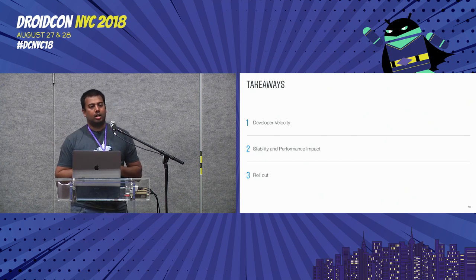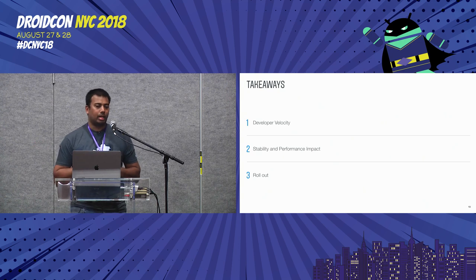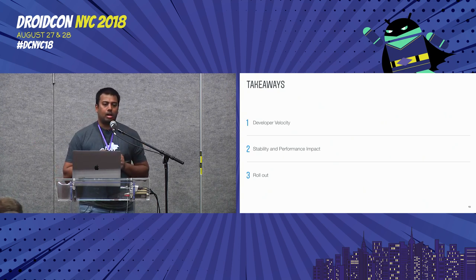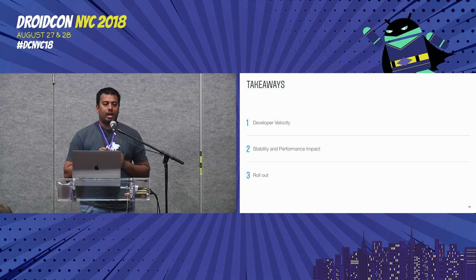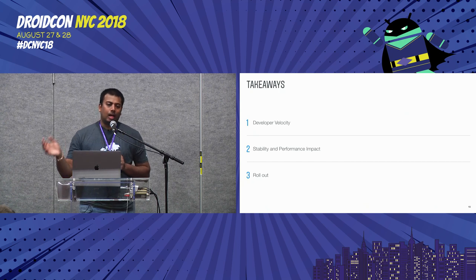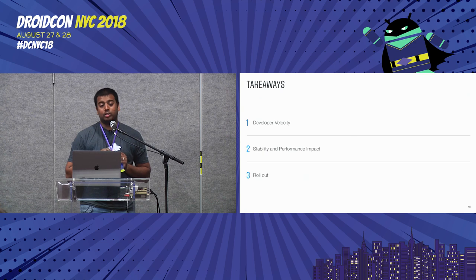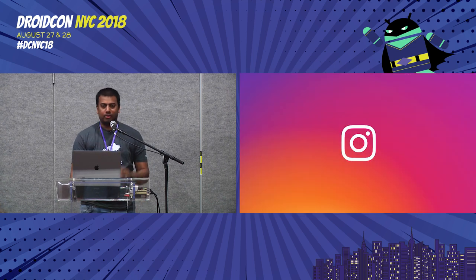The third takeaway was about the rollout. A/B testing something as big as an infrastructure change like this is very difficult. But the extensive QA testing and beta signals helped us uncover subtle bugs that seemed to be perfectly handled in our solution. That's all I have.